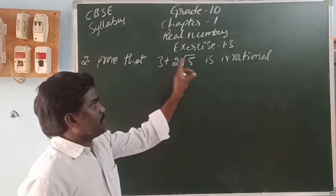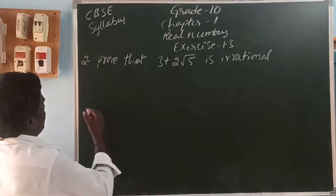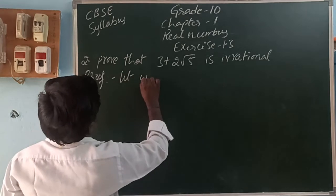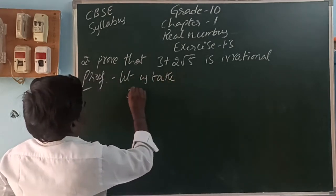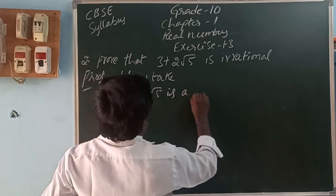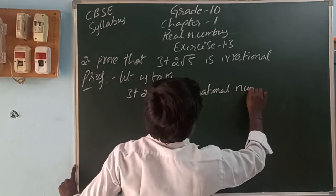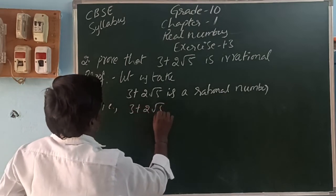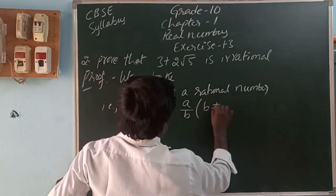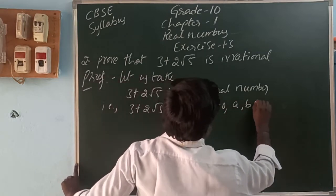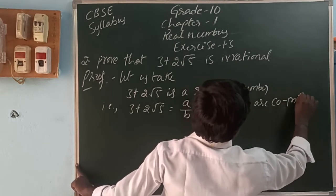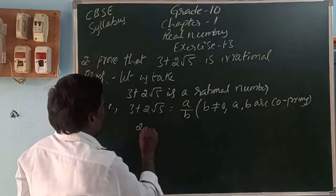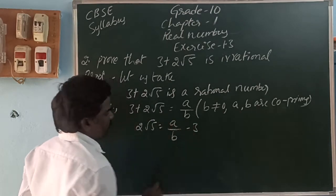Prove that 3 plus 2 root 5 is an irrational number. How we can prove? By using the contradiction method. Let us take 3 plus 2 root 5 is a rational number. That is, 3 plus 2 root 5 is equal to a by b, where b is not equal to zero.